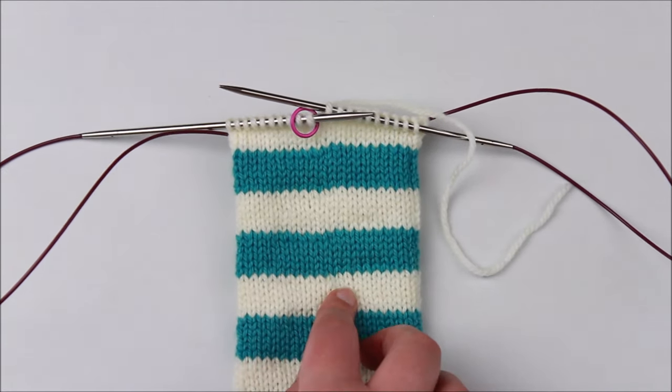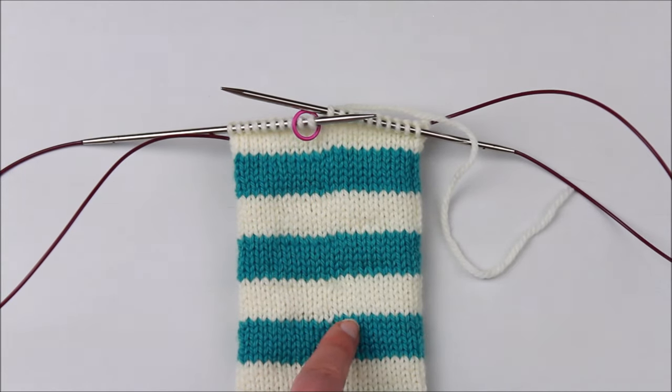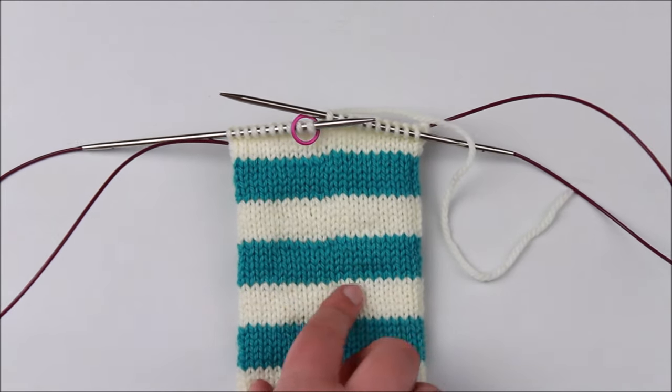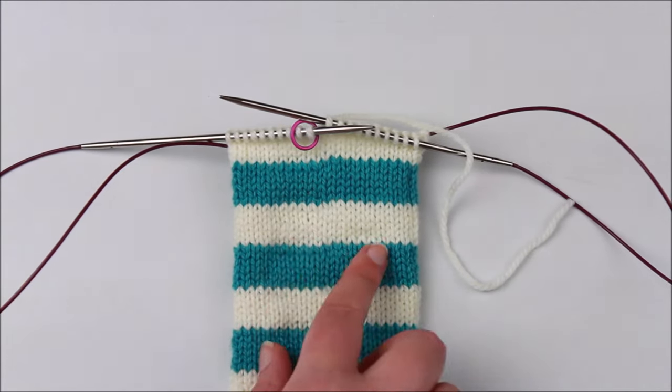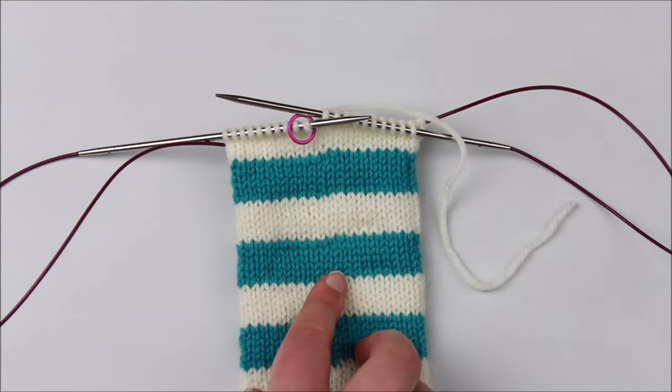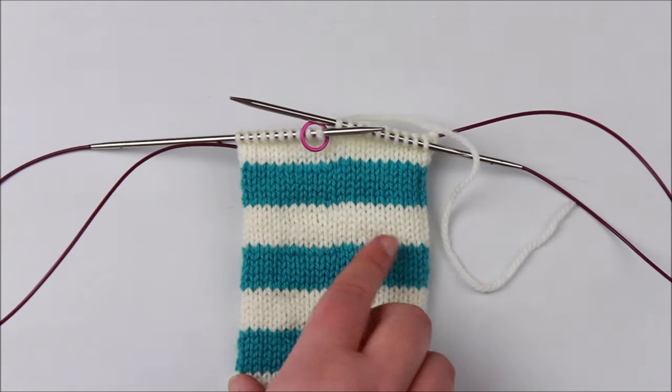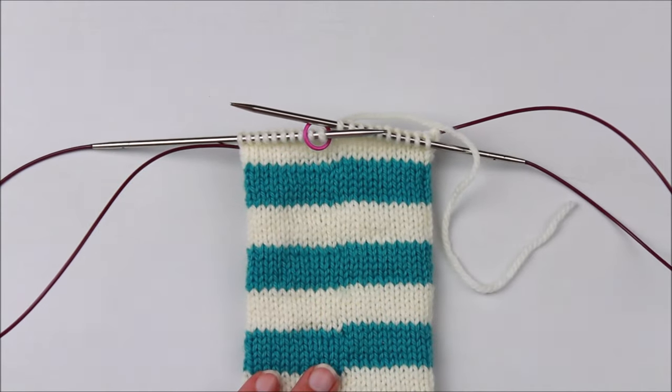Now up here it's a lot harder to see where I've changed colour. So this is my beginning of round point, literally worked to the end of the round and then just started knitting with the new colour. Up here the line is a lot smoother and it's a lot harder to see where that change of colour has occurred. So this is the technique I'll be showing you today of how to work jogless stripes and it's really easy so let's get straight into it.